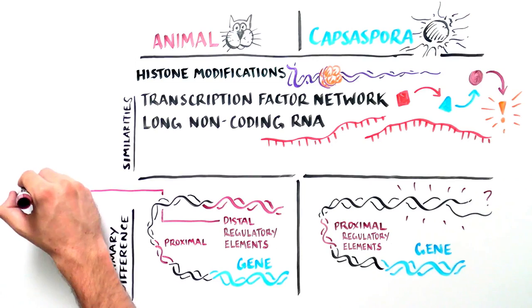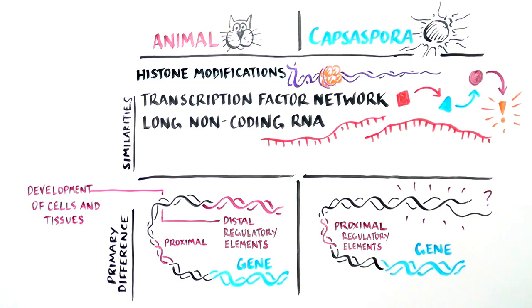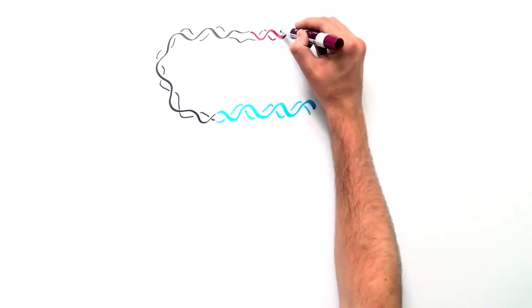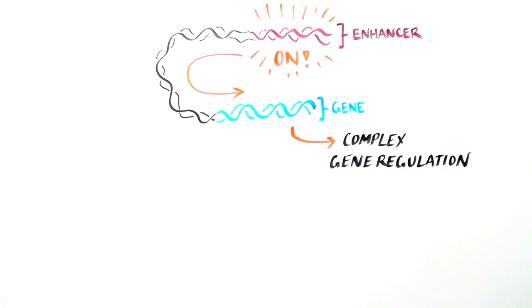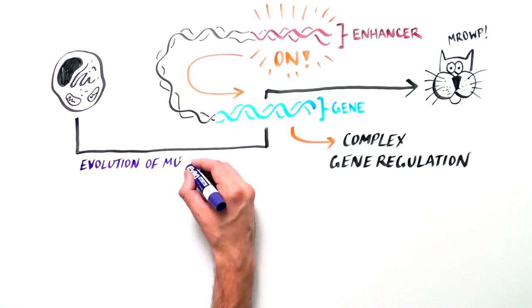It turns out that these sites, known as enhancers, are critical for the development of different cell types and tissues in animals. These enhancers may constitute the basis for the sophisticated gene regulation observed in animals and may be the missing key to understanding evolution of multicellularity.